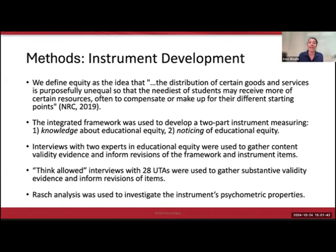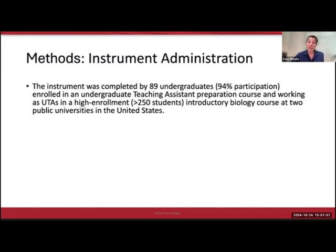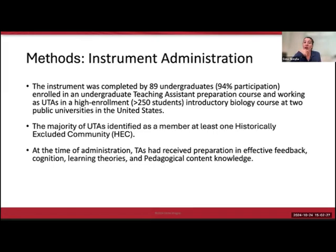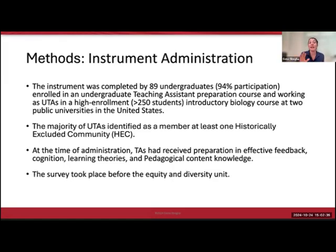I won't go into detail on the psychometric analysis, but I'll show you some results that I think are useful. The instrument was administered to a group of undergraduate teaching assistants taking a preparation course alongside their UTA work in an actual classroom. These students were all working in high enrollment introductory biology courses of over 250 students, and 89 undergraduate TAs completed the survey with a 94% participation rate. The majority identified as a member of at least one historically excluded community. At the time of administration, TAs had received preparation in topics like effective feedback, cognition, learning theories, and pedagogical content knowledge, but not yet on equity and diversity—this survey took place before that unit.